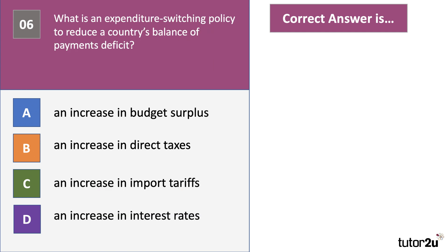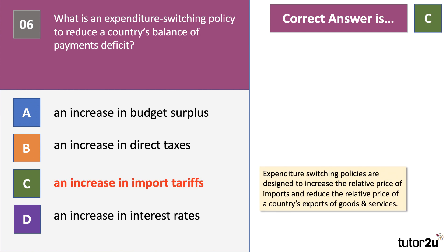Here's the final question: what is an expenditure-switching policy designed to reduce a country's balance of payments deficit on the current account? The answer to question six is C — an increase in import tariffs. Expenditure-switching policies are any policies designed to increase the relative price of imports and/or reduce the relative price of a country's exports. Tariffs make imports more expensive and should lead to a fall in import demand. The other options — higher budget surplus, higher direct taxes, and an increase in interest rates — are all expenditure-reducing policies.